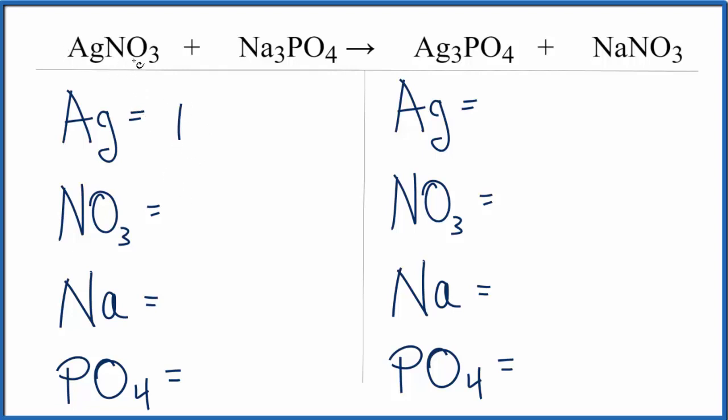So we have Ag1, and then I've got an NO3 here, as well as an NO3 over here. So I'm just going to call the NO3 one item, and that'll keep me from having to count up all these different oxygen atoms and so on. Sodiums, I have three, and then again, PO4. I have a PO4 here, and I have one over here, so I'm just going to call that one item.